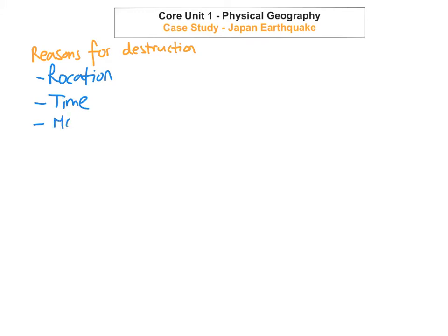The next reason is the magnitude — because the earthquake was 9 on the Richter scale, one of the fifth biggest ever recorded. It meant that the buildings, even though they were constructed very well, weren't able to withstand the sheer size of the seismic waves. This resulted in many buildings collapsing and led to more destruction, deaths, and injuries.